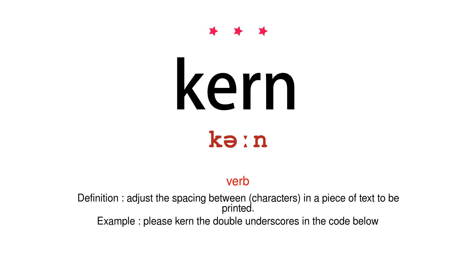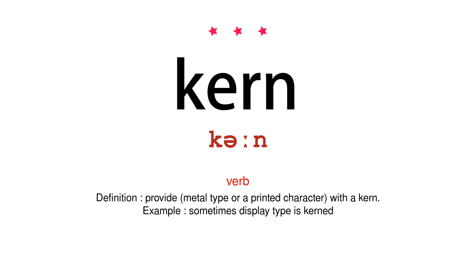Verb definition: adjust the spacing between characters in a piece of text to be printed. Example: please kern the double underscores in the code below. Verb definition: provide metal type or a printed character with a kern. Example: sometimes display type is kerned.